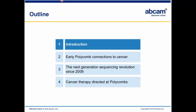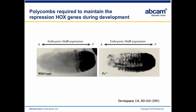So what are polycoms? They were identified in Drosophila as being repressors of HOX genes — homeotic genes. Here's a classic experiment. On the left you can see a wild-type embryo with staining for the HOX gene ABDB, expressed in its particular region. On the right is a polycom mutant — the gene encoding the polycom protein is mutated. The HOX gene is still expressed where it should be, but it's upregulated in regions where it shouldn't be. This is the classic polycom phenotype: it is required for the maintenance of repression of HOX genes during development.